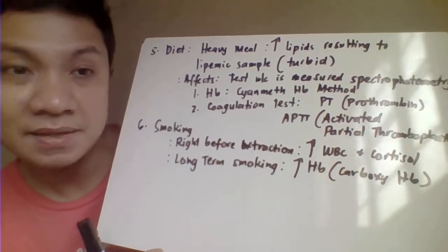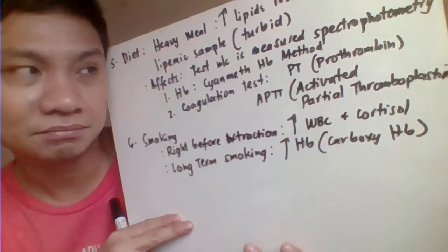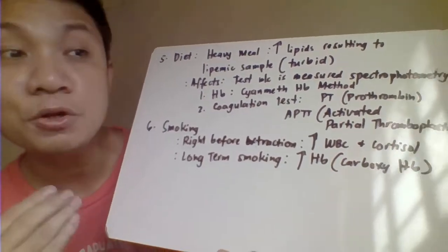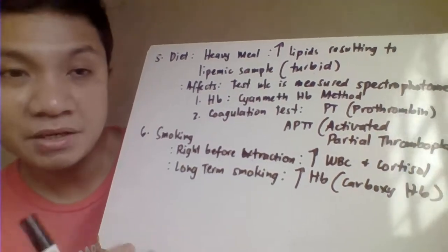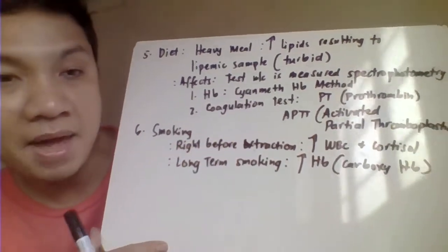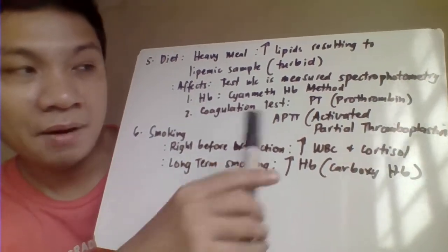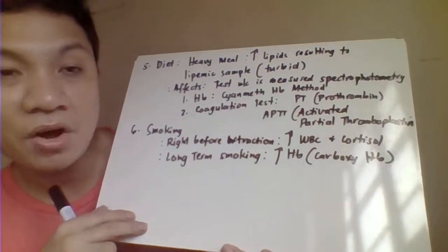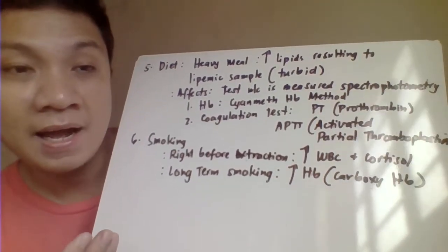What will be the effect of a lipemic sample on hematology tests? There are some hematology tests where we measure using spectrophotometry. Spectrophotometry is based on turbidity — the amount of light absorbed by your substance. The more turbid the sample, the higher the apparent concentration. Tests measured by spectrophotometric method in hematology include hemoglobin, through the cyanmethemoglobin method, and coagulation studies such as PT (prothrombin time) and APTT (activated partial thromboplastin time), which use an optical method — and therefore would also be affected by a heavy meal.